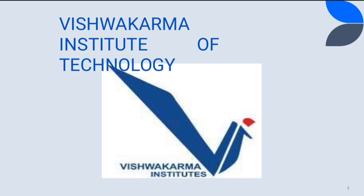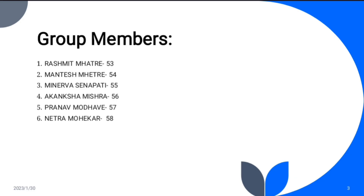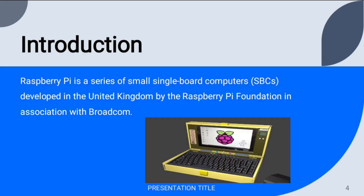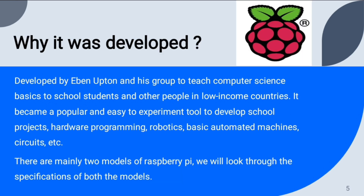Hello everyone, we the students of Vishwakarma Institute of Technology are here with a short YouTube video on Raspberry Pi. I belong to division L, group 10. Raspberry Pi is basically a small single-board computer — it is very handy, we can hold it in our hand and operate it. Raspberry Pi was developed by Eben Upton in the United Kingdom, and was originally used for small school projects.